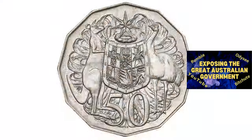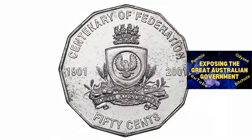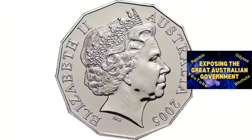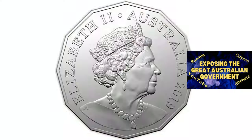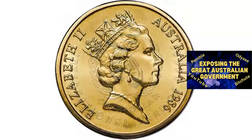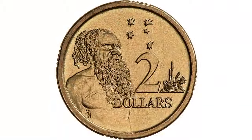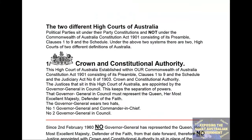We are trying to simplify this factual information so it is easier for people to comprehend, and this is no easy task. Don't you think it's time we all took notice of this information, as we don't want any of ours or your future generations living under tyranny. Political parties sit under their party constitutions and not under the Commonwealth of Australia Constitution Act 1901 consisting of its preamble, clauses 1 to 9, and the schedule.